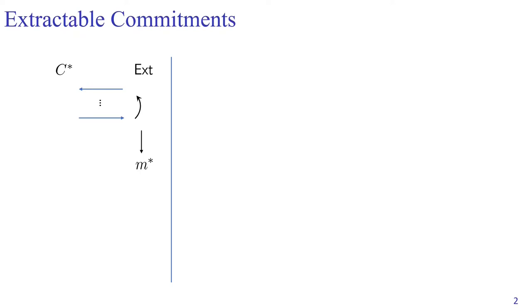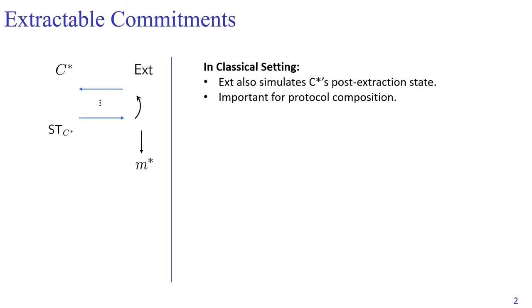In the classical setting, this primitive enjoys some property that we usually take for granted. The extractor is able to not only extract the committed value M star, it can also simulate C star's post-extraction state. This property is particularly important for protocol composition.